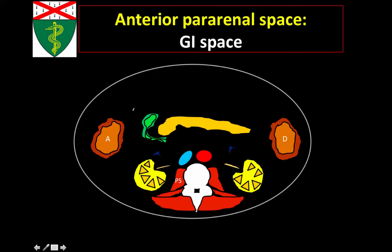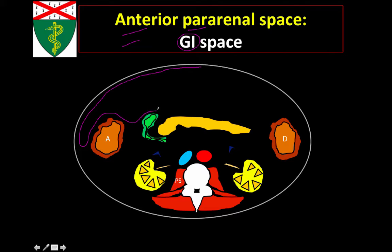Let's start talking about the different retroperitoneal spaces. The first is the anterior pararenal space, also known as the GI space because it contains a lot of the gastrointestinal organs of the retroperitoneum. To delineate it, it's important first to trace out the peritoneal lining. Here's the peritoneal lining drawn in magenta, lining the anterior abdominal wall. It takes a dip along the lateral abdominal wall and reflects over the ascending colon, over the second portion of the duodenum, over the pancreas, and reflects over the descending colon and back again to line the anterior abdominal wall. All this lining in magenta is essentially parietal peritoneum. Next, I'm going to draw the other layers that delineate the anterior pararenal space. The first layer is the anterior pararenal fascia, also known as Gerota's fascia.